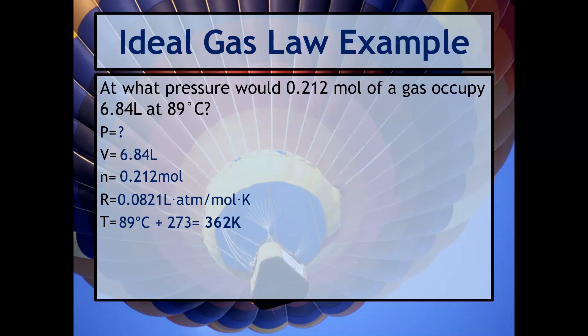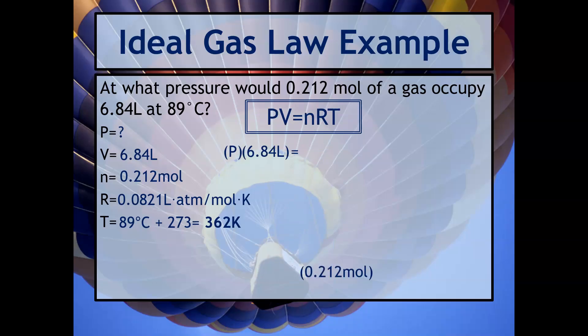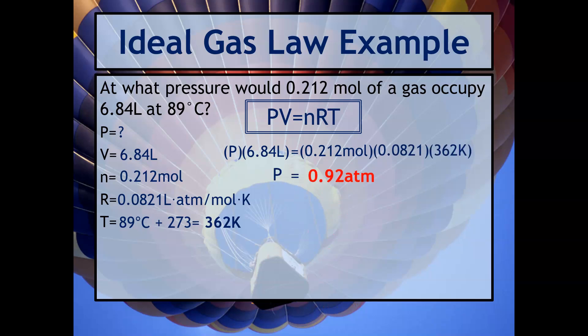I always like to check that all units are what they need to be. We've got volume in liters — that's good. We've got moles and our temperature looks great. So I'm going to plug in all this information, and we get that our pressure is 0.92 ATM. The reason it comes out in ATM is because the ideal gas constant has the unit of ATM in it.